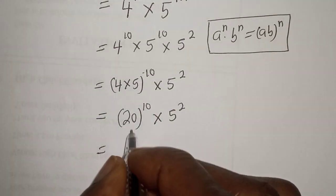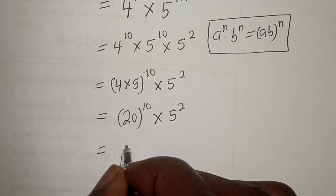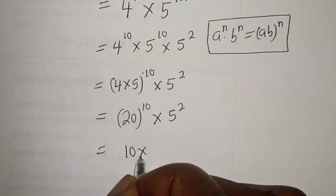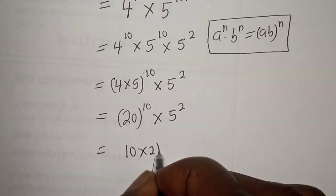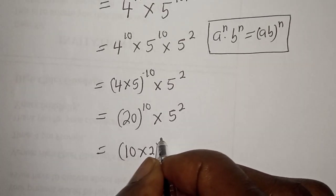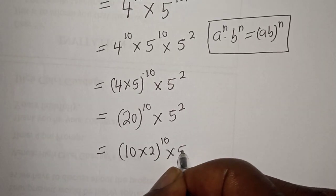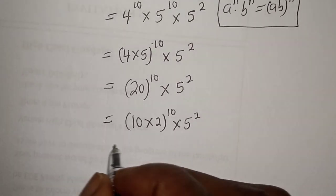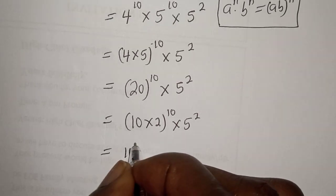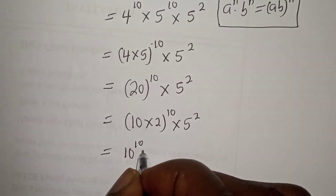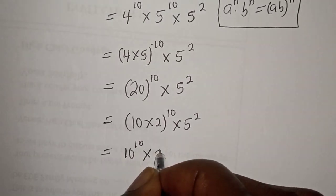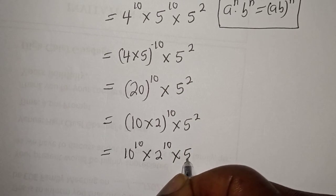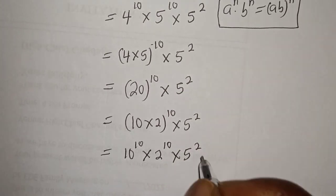So, this is equal to — 20 can be written as 10 multiplied by 2 — raised to power 10 multiplied by 5 squared. So this is equal to 10 raised to power 10 multiplied by 2 raised to power 10 multiplied by 5 squared.